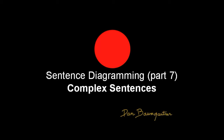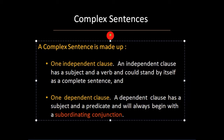Now let's talk about diagramming complex sentences. A complex sentence is made up of one independent clause and one dependent clause. An independent clause has a subject and a predicate and could stand by itself as a complete sentence. A dependent clause has a subject and a predicate, but will always begin with a subordinating conjunction.